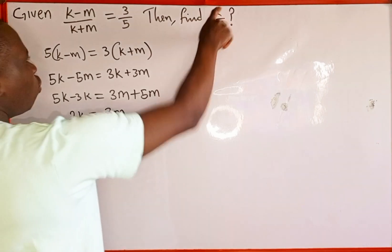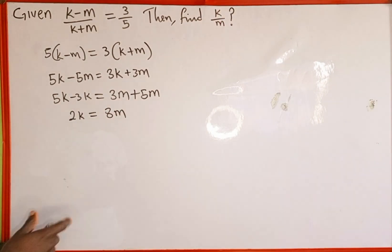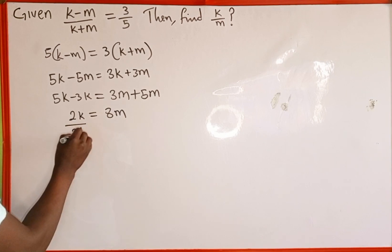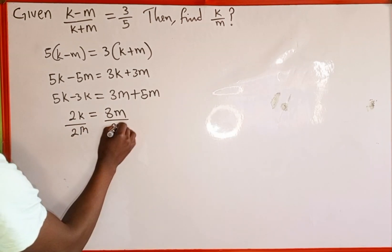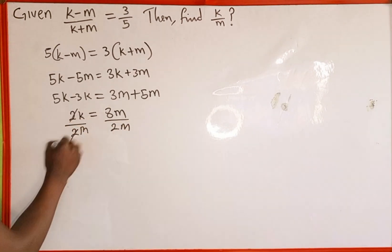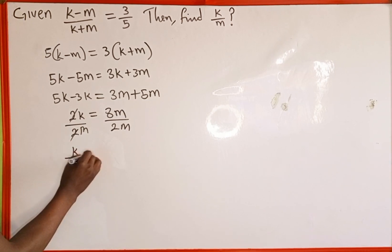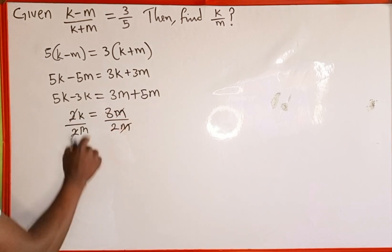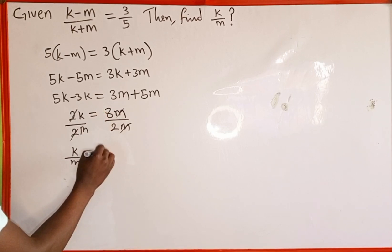Now remember we are looking for the value of k over m. We are going to divide both sides by 2m. So we divide by 2m here and also by 2m here, so that this 2 is going to cancel this 2. We have k over m now, which will be equal to 8m divided by 2m. The m is going to cancel m, and 8 divided by 2 is going to be 4.